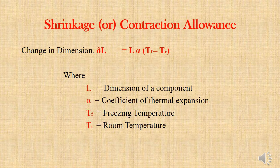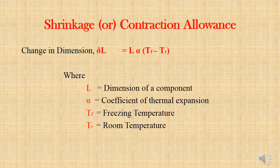Here is the formula for calculating shrinkage allowance. ΔL is the change in dimension, i.e., the shrinkage allowance on the pattern. ΔL = L × α × (Tf − Tr), where L is the dimension of the component, α is the coefficient of thermal expansion, Tf is the freezing temperature, and Tr is the room temperature.